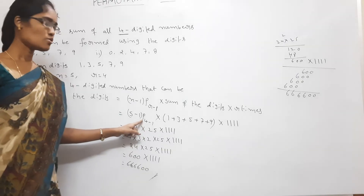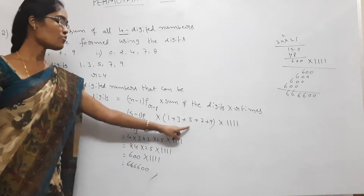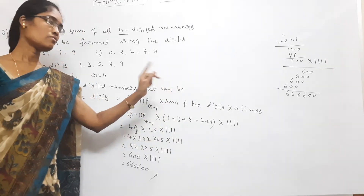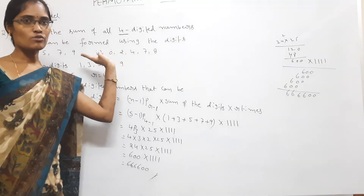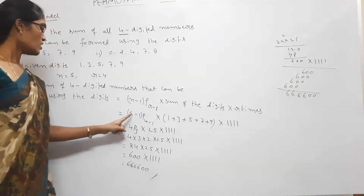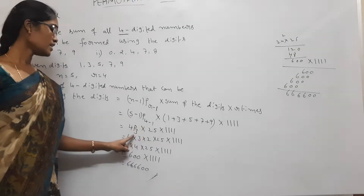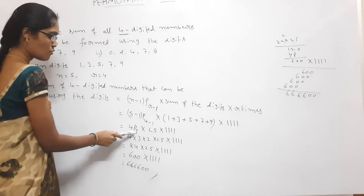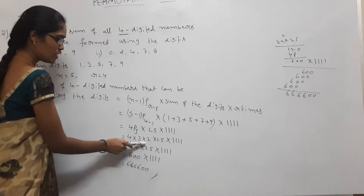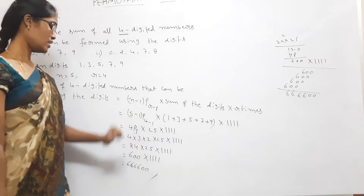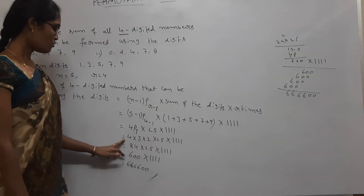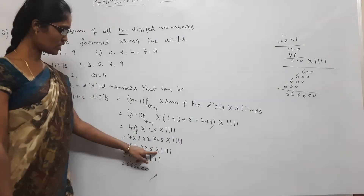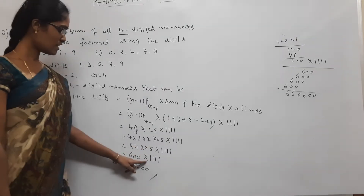Recap: the sum of four-digit numbers = (n−1)P(r−1) × sum of digits × r times. Substituting: 5 minus 1 P 4 minus 1, into sum of digits (1+3+5+7+9 = 25) into 1111 (4 times). 4P3 = 4×3×2 = 24. Then 24 into 25 = 600. So 600 into 1111 = 666,600.